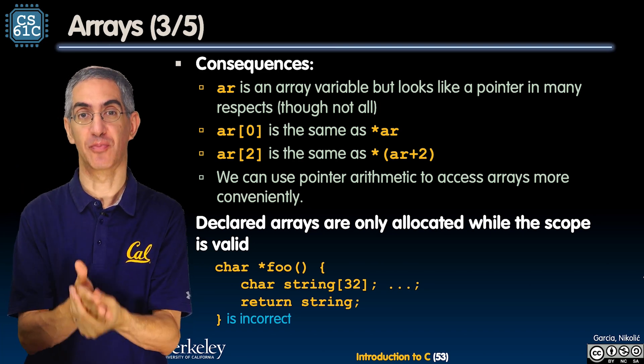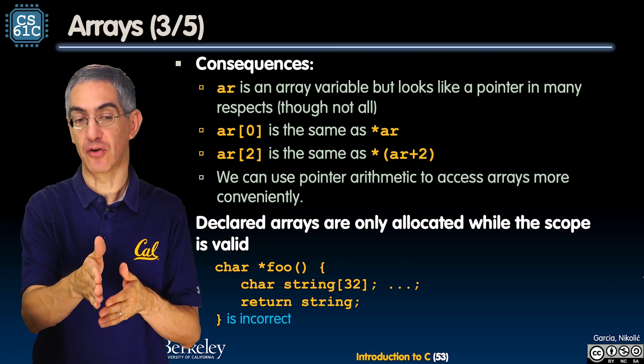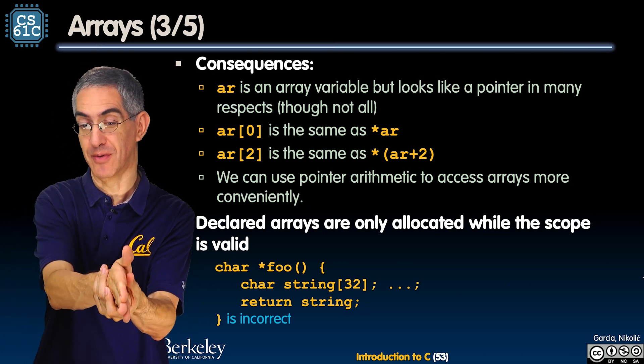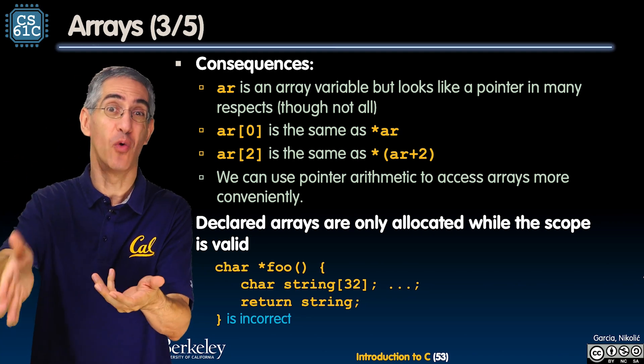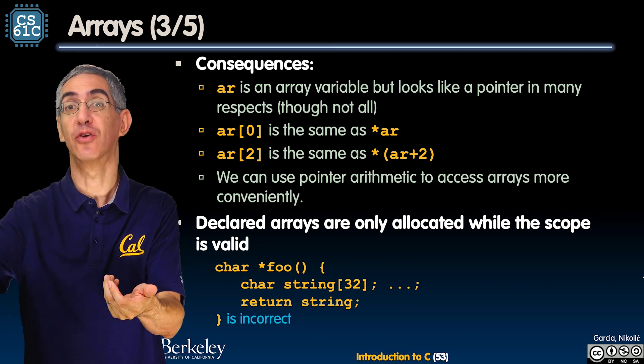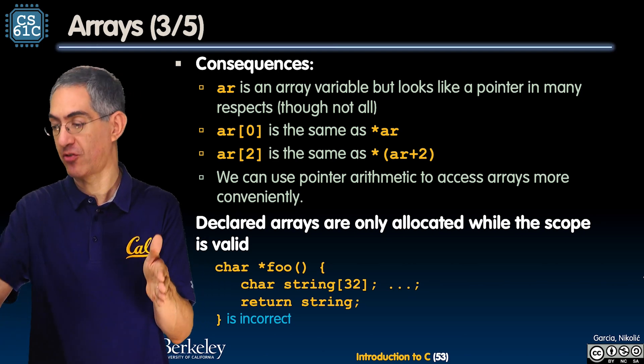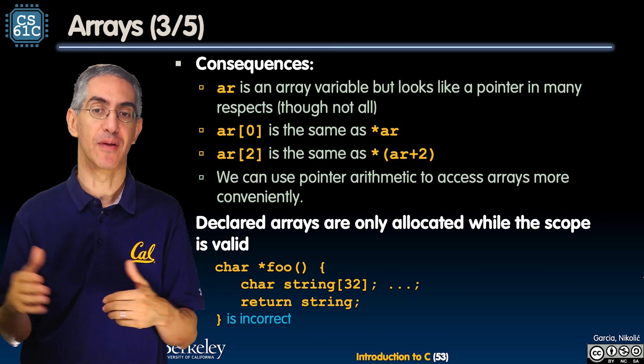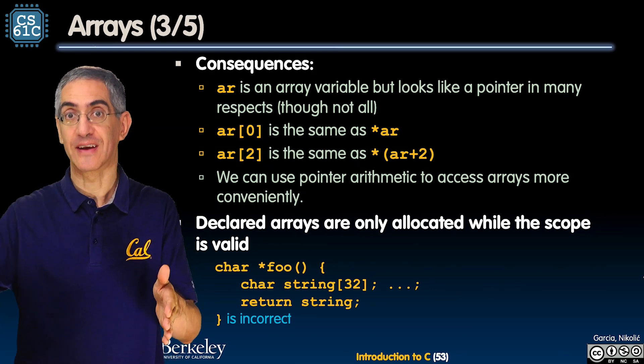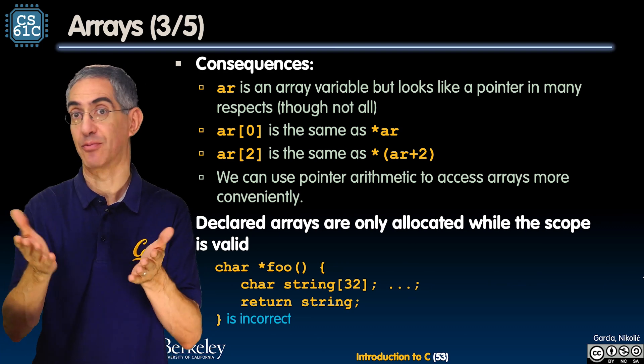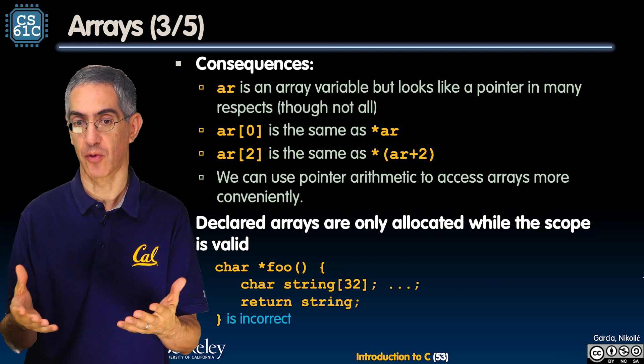This is the first time I've shown you pointer arithmetic. And the plus two says look, whatever AR is pointing to I don't want that one the zeroth element, I don't want the next one that's the first element. I want the two index one, I want the one two over. So you say well Dan how does it know how wide they are? How much to increment the pointer? That's what types are about. That's why you told it what type that pointer was to, that array was for.